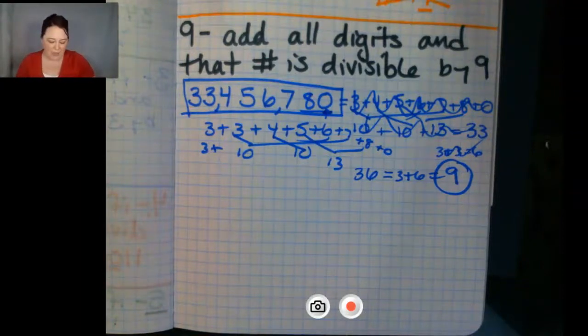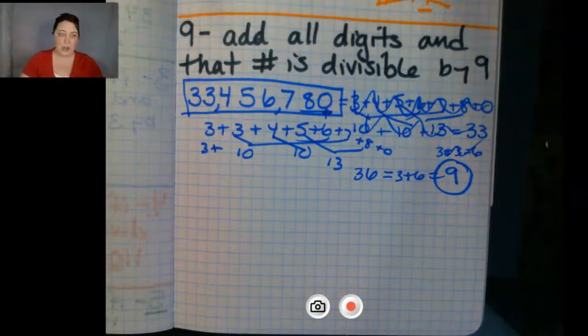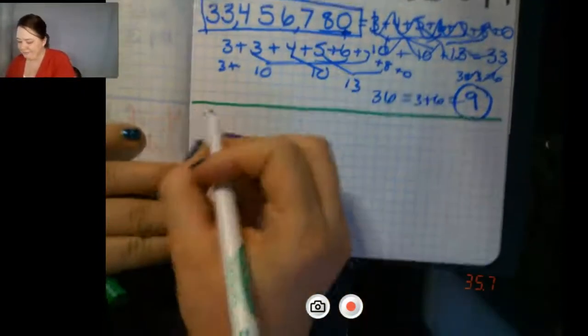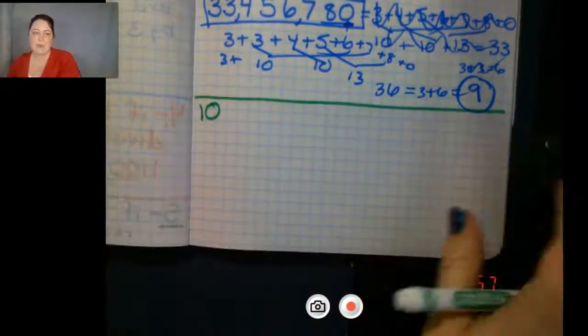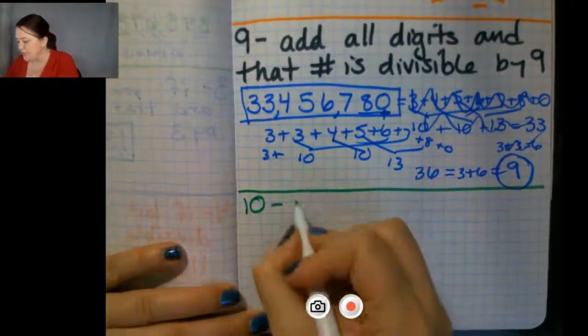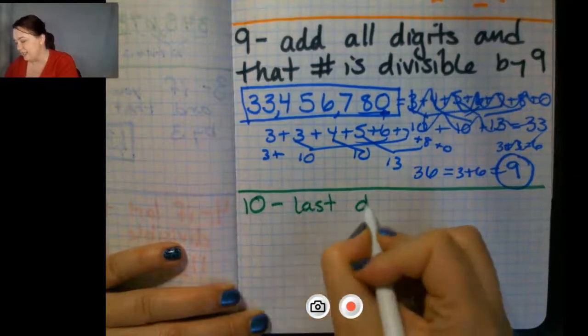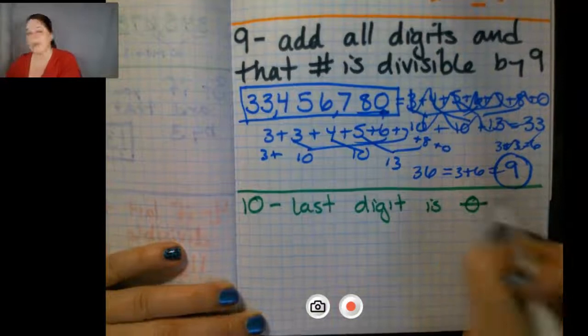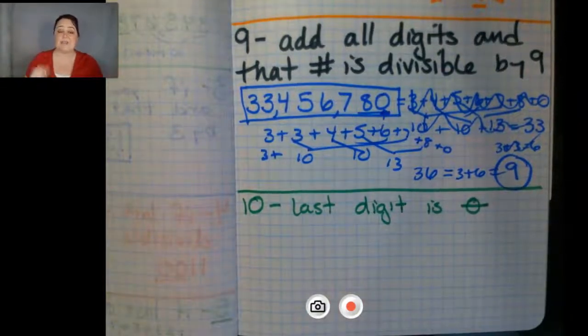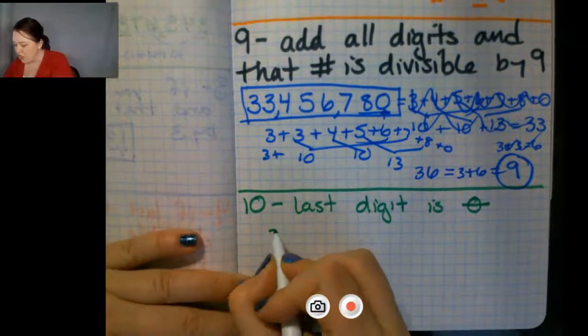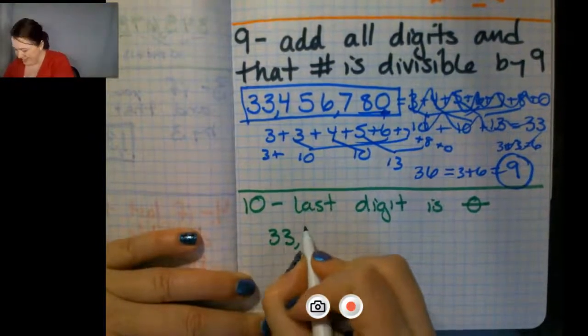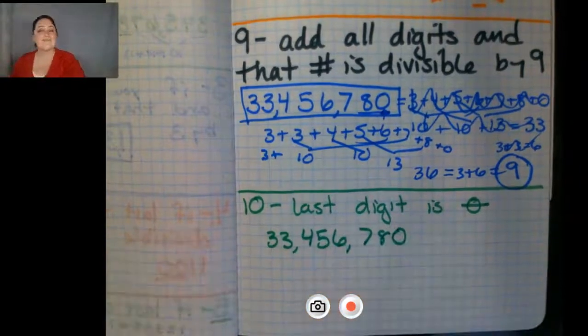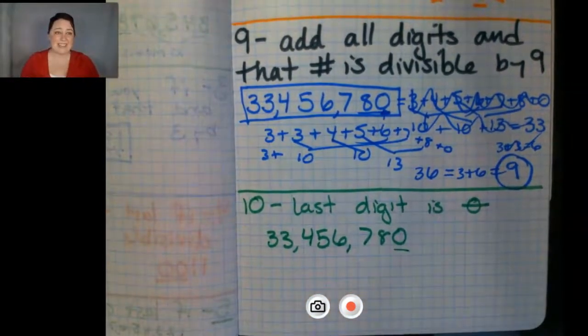The last one that I do is also one of my favorites. And I know you've heard me say this before. And that is 10. 10 is actually the last one we do. The rule for 10 is last digit is zero. The last digit is zero. It's divisible by 10. So my glorious number here, 33,456,780. It ends in a zero. It's divisible by 10.